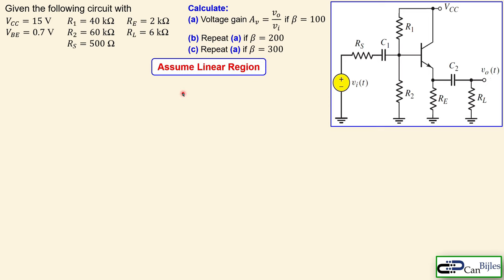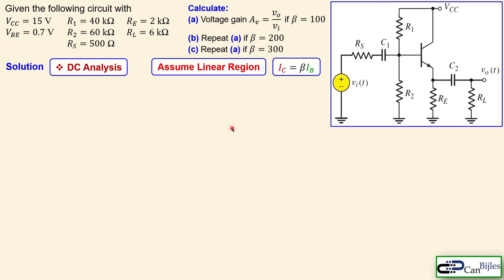We will assume that our BJT is operating in the linear region. That means the collector current is linearly related to the base current through the beta value, which is the parameter of the transistor. We start with the DC analysis and then move on to the AC analysis, from which we will calculate the required voltage gain.